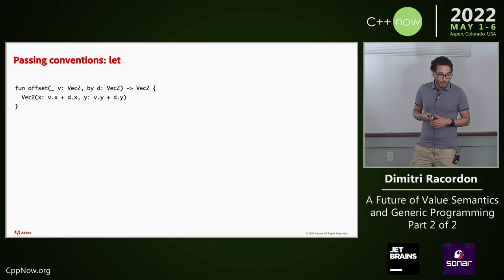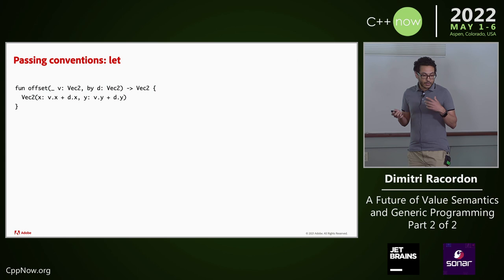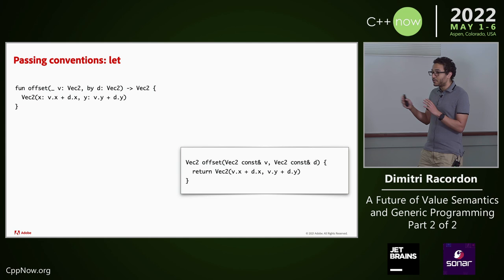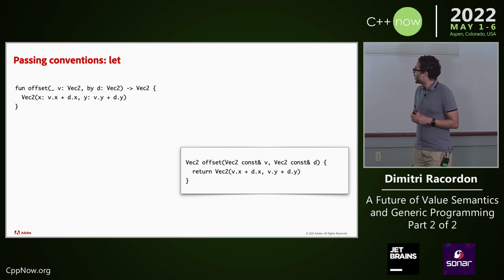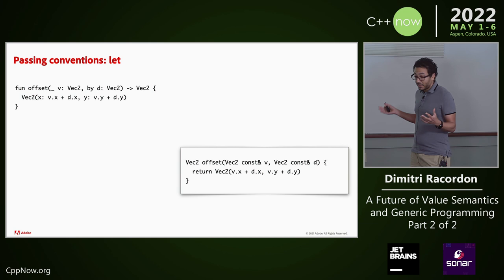Here is an offset function for my vector, taking a vector and the offset delta. Let parameters are passed by value and are immutable in the function — very similar to what we've seen with Swift. They can be passed by const reference with guarantees that they cannot change during the call. There's a contract between caller and callee: both just agree not to mutate the argument. An additional clause in the fine print is that the argument is safe to use — it's initialized and its invariant holds.